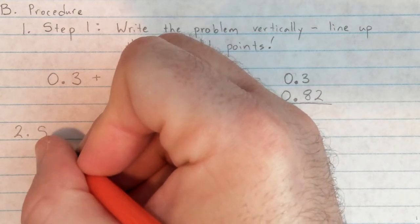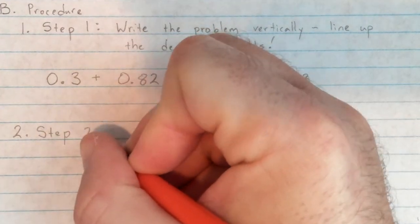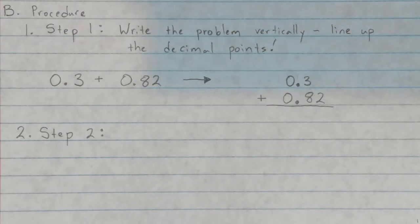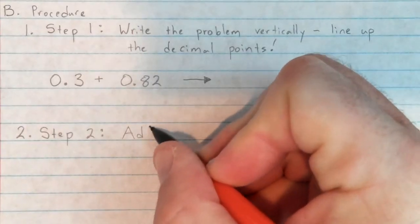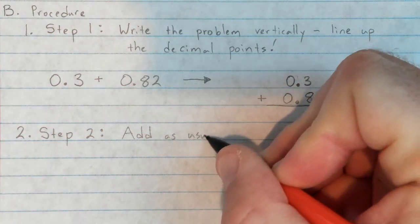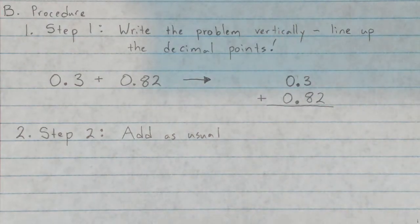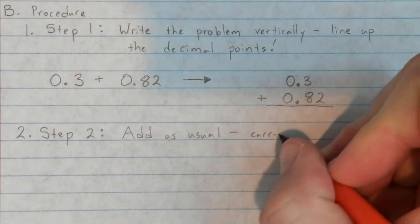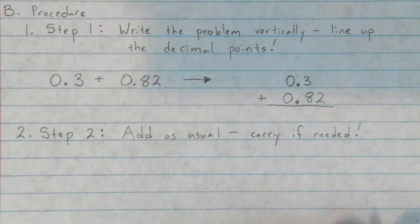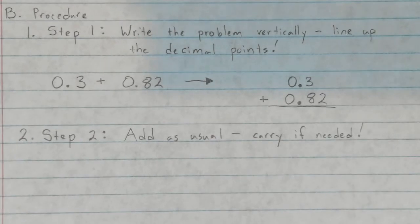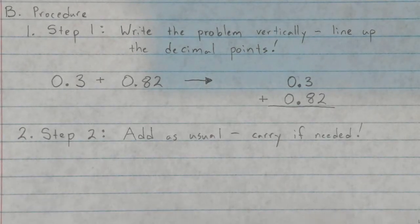That's step one, and lining up the decimal points is the key. If you don't line up those decimal points, your sum is going to be wrong. Once you've done that, add as usual — standard algorithm, the way you always add. Step two: carry if needed. If you make a group of ten, carry something into the next column.